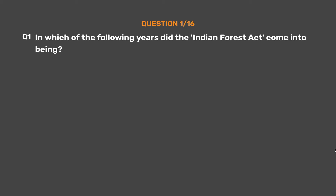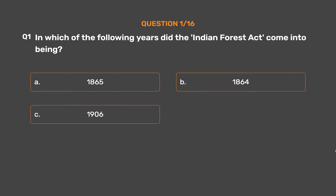Question 1: In which of the following years did the Indian Forest Act come into being? Option A: 1865. Option B: 1864. Option C: 1906. Option D: 1910.